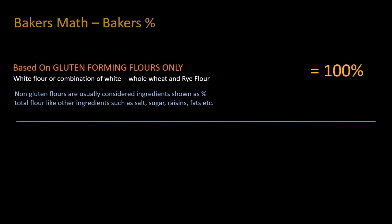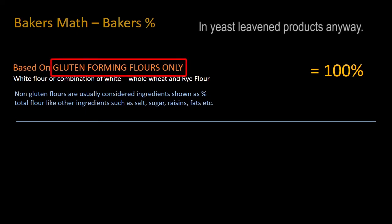When you're talking about Baker's Percent, you're talking about all of the ingredients based on flour being 100 percent. Keep in mind this is on the gluten-forming flours only. If you start adding things like buckwheat flours, those are not included in the total flour amount which equates to 100 percent. It's always on gluten-forming flours only.